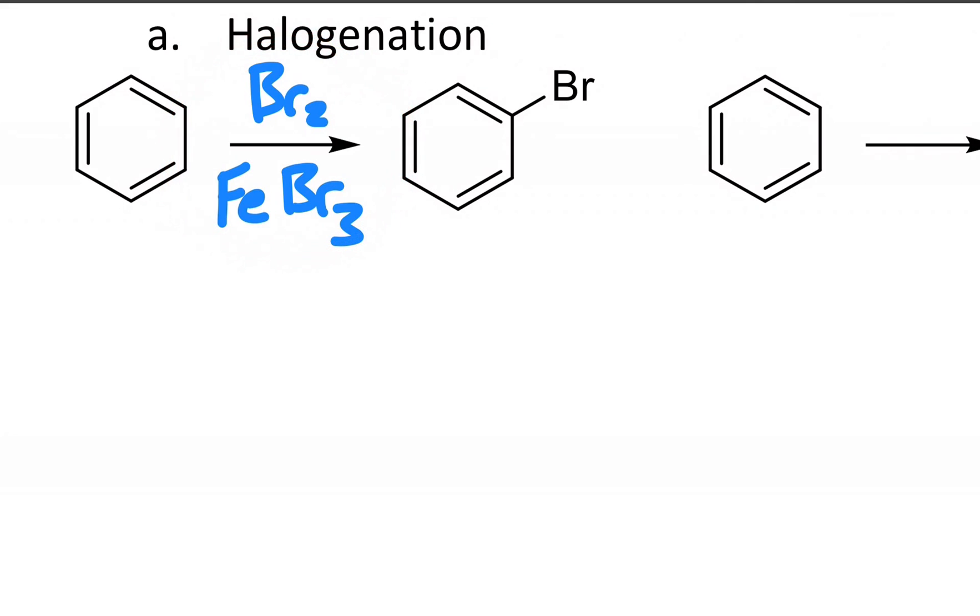I'm going to draw out a bromine molecule, just showing the sigma bond, and when this sees the iron ion in iron-3-bromide, the iron acts as a Lewis acid and it actually removes one of the bromides.